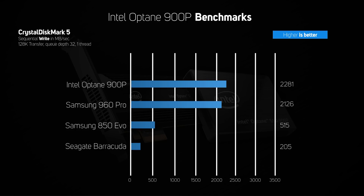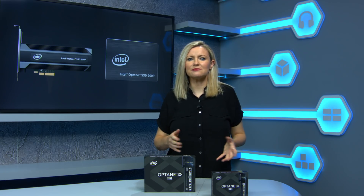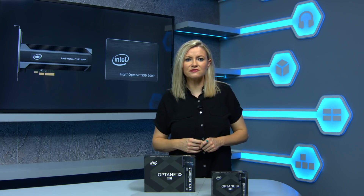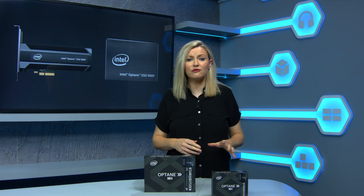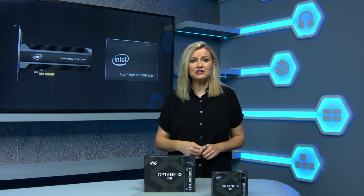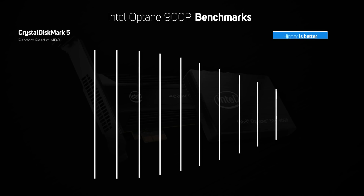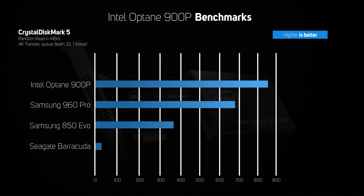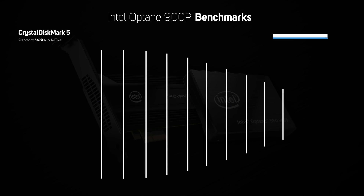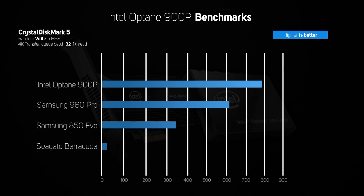The second scenario in CrystalDiskMark drops the transfer size down to 4K, although the queue depth of 32 is still extremely high. Even so, this more strenuous test really begins to separate the men from the boys, with the 900p taking clear first place in both the read and write test, with a clear 20% lead over the 960 Pro.